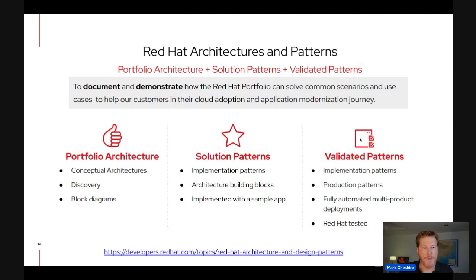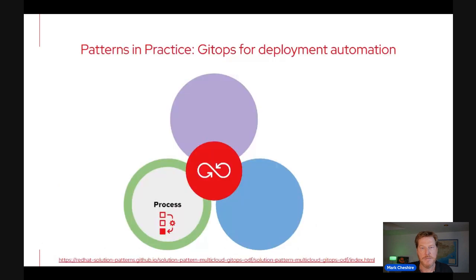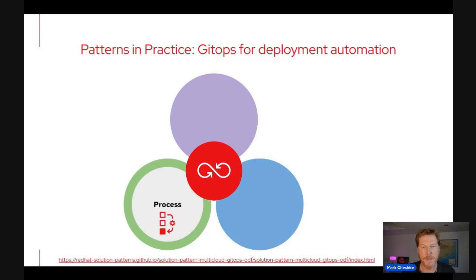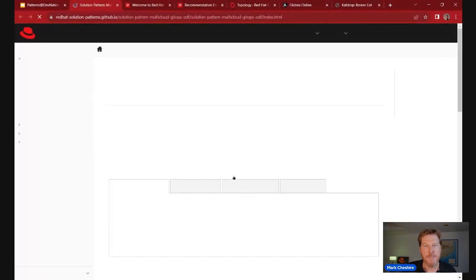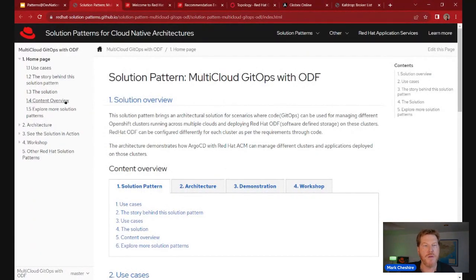Together, these three pattern types give you full coverage for your journey to the cloud. Let's go back to the process improvement building blocks and see how these relate, giving examples in each of the three dimensions. For the first dimension, we'll start with more insight into what a solution pattern looks like. In the process dimension, a very common challenge is that in a multi-cloud environment it's really difficult to automate deployments of application code to different clouds simultaneously. We'll take advantage of a solution pattern for multi-cloud deployments using GitOps.